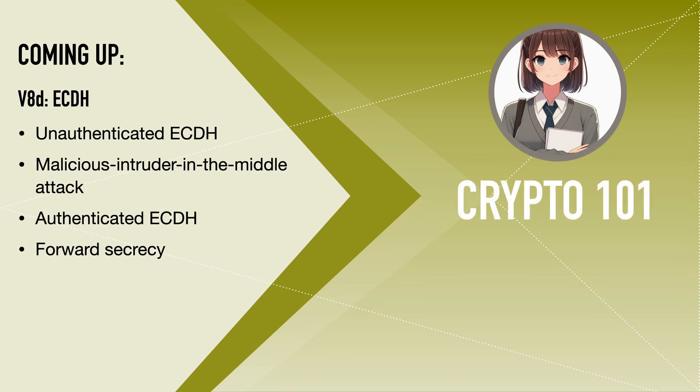The elliptic curve Diffie-Hellman key agreement scheme, ECDH, allows two parties to agree upon a shared secret key by communicating over an unsecured channel. We'll first present a basic unauthenticated version of ECDH. The malicious intruder-in-the-middle attack on ECDH illustrates the importance of authenticating the communications. Finally, I'll explain why Google started using ECDH in TLS in 2012.